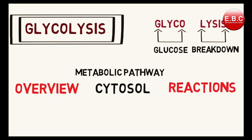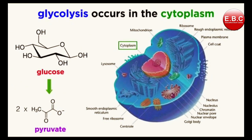The word glycolysis is made up of two words: glyco means glucose, and lysis means breakdown. Glycolysis is a metabolic pathway that involves the systematic breakdown of glucose to produce energy. It takes place in the cytosol of the cells — so the location of glycolysis is the cytosol.